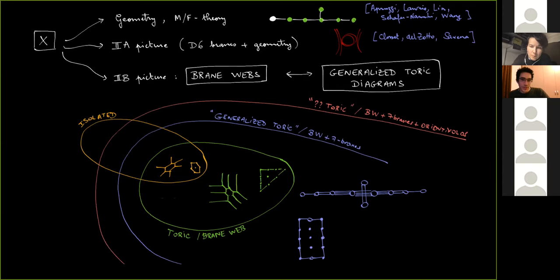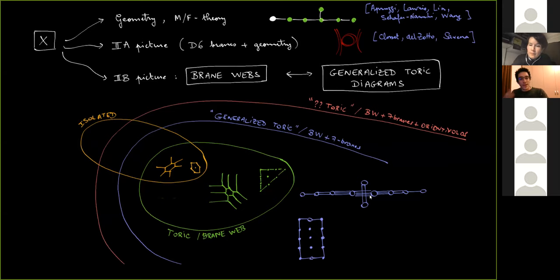Generalized toric diagrams correspond to brane webs that include seven-branes, on which five-branes can end. Crucially, several five-branes can end on the same seven-brane. In principle, you can go further — adding discrete actions on the webs, adding orientifolds, and many other things. But for today, I will limit myself to this category of generalized toric diagrams with seven-branes.